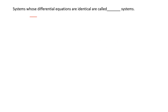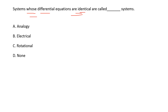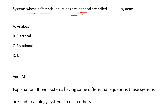Next: the systems whose differential equations are identical are called — options are: analogy, electrical, rotational, none of the above. Systems whose differential equations are identical (similar) are called analogy systems. So option A is the right answer — if two systems have the same differential equations, those systems are called analogous to each other.